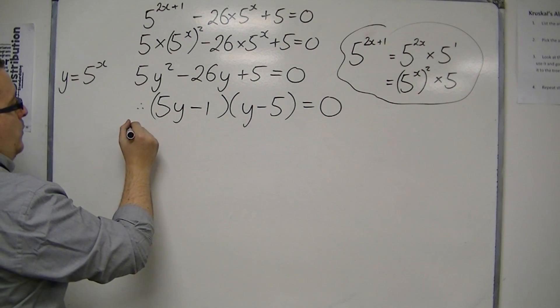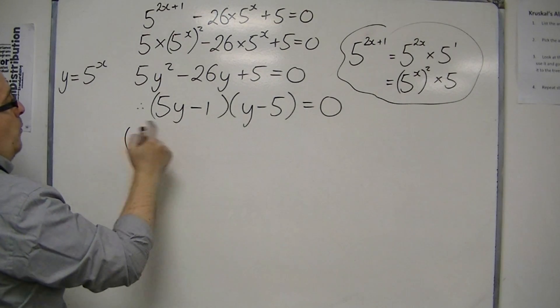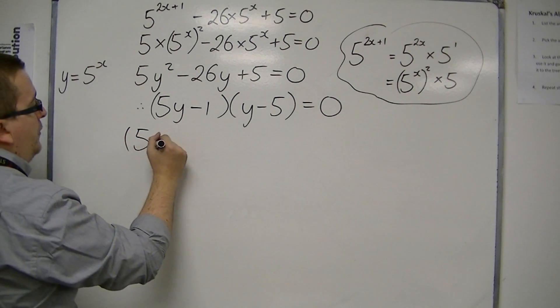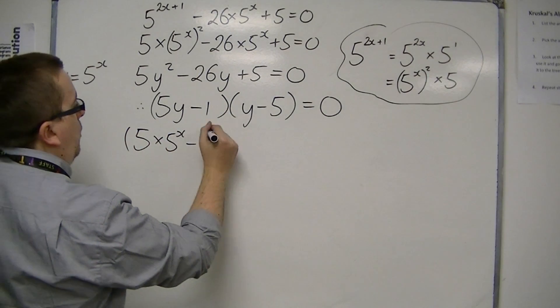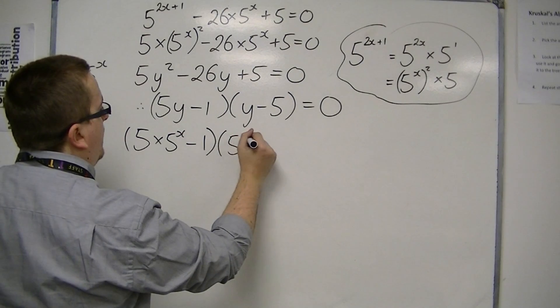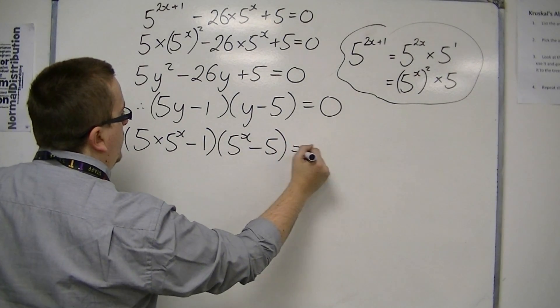So we have, if I put the y's back in as 5 to the x, 5 times 5 to the x minus 1 times 5 to the x minus 5 equals 0.